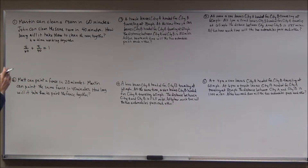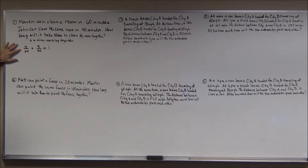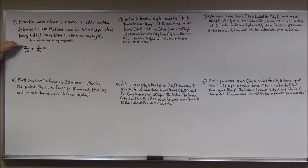That's how these problems work. You can have all sorts of variations — one person starts the job earlier, or maybe you know how long they can get the job done working together but you don't know Martin or John's individual time. But in this case, it's the time working together over the individual time. That's how you get the fraction of the job — this is for Martin, this is for John.